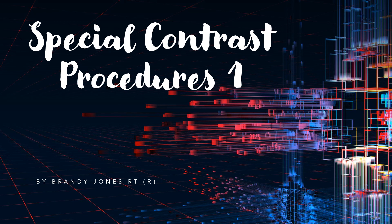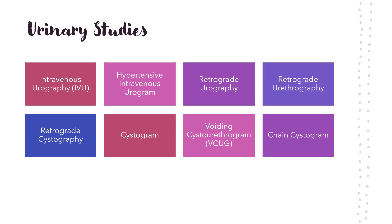Special Contrast Procedures 1 with Brandy Jones. Urinary studies covered include intravenous urography, which is IVU — previously called IVP, or intravenous pyelography. Also covered: hypertensive intravenous urogram, retrograde urography, retrograde urethrography, retrograde cystography, cystogram, voiding cystourethrogram, VCUG, and a chain cystogram.